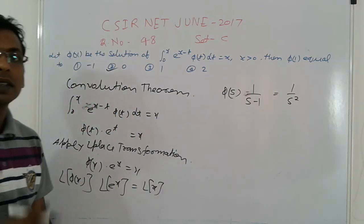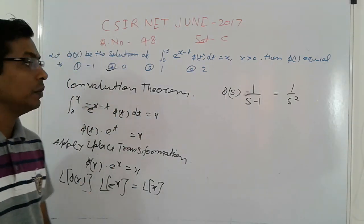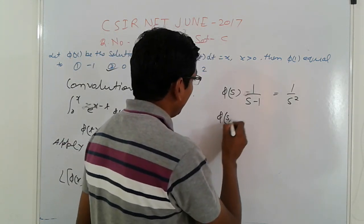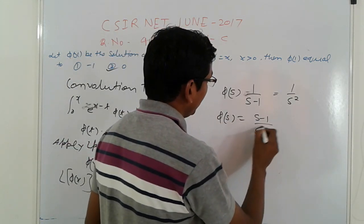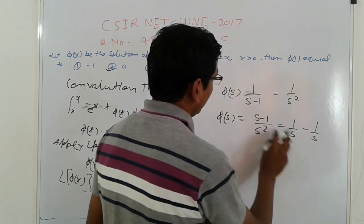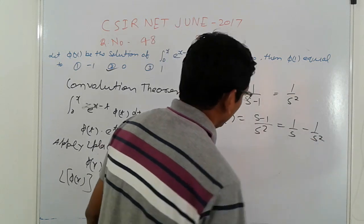Therefore, L{φ(x)} = (s-1)/s². Simplification gives 1/s - 1/s². Taking inverse Laplace.